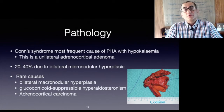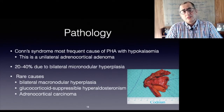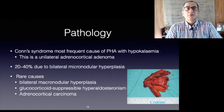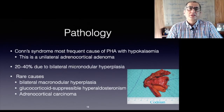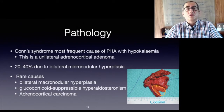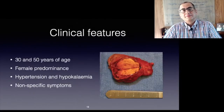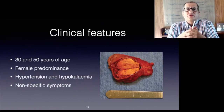The most frequent cause of PHA with hypokalemia is a unilateral adrenocortical adenoma, called a Conn's adenoma — the syndrome being Conn's syndrome. In 20 to 40 percent of cases, bilateral micronodular hyperplasia is causative. Rare causes include bilateral macronodular hyperplasia, glucocorticoid-suppressible hyperaldosteronism, or adrenocortical carcinoma. In patients with normokalemic PHA, 70 percent have hyperplasia and 30 percent a unilateral adenoma. Here you can see a Conn's adenoma of the left adrenal gland alongside the normal-shaped adrenal gland.